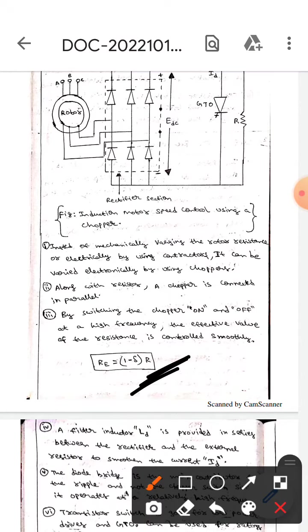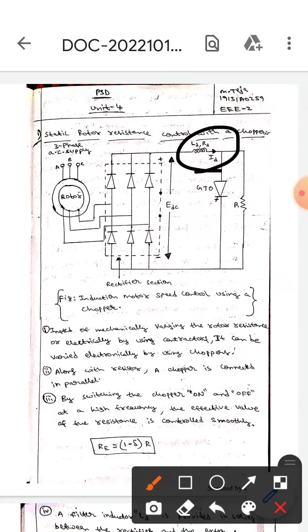Which means here we got the equation: R equals (1 minus delta) into R. Here this is the LD, this is the filter inductor LD.